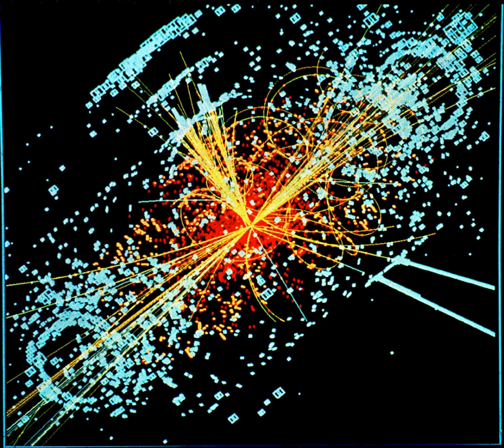Frank Close regularly argues that the layers of nature may be like the layers of an onion, and that the number of layers might be infinite. This would imply an infinite sequence of physical theories.